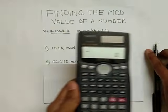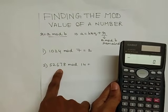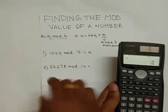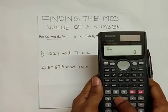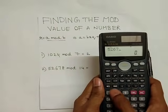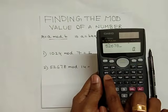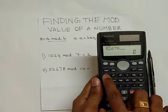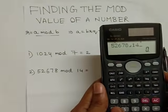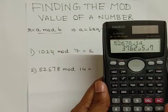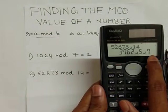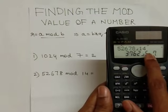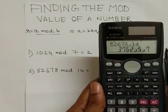Now in our second example, 52678 mod 14. Take the calculator, enter the value 52678. Press the button A by B C and enter 14. So you can see the value we entered is 14, but here you can see 7. 14 by 7 is 2.